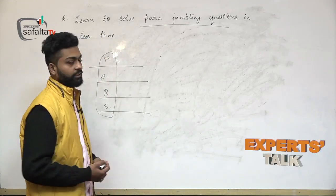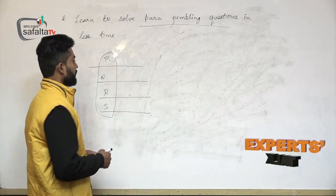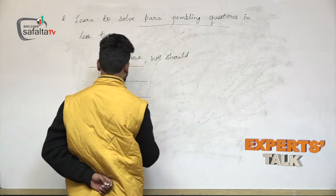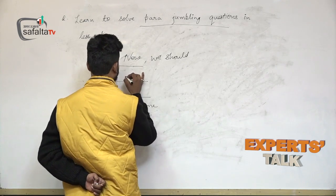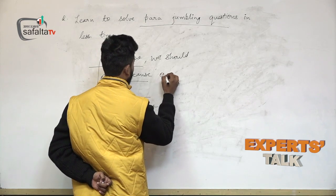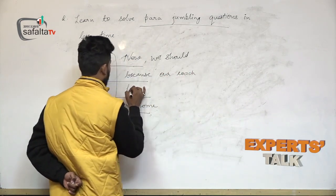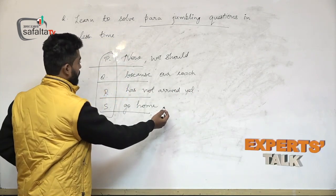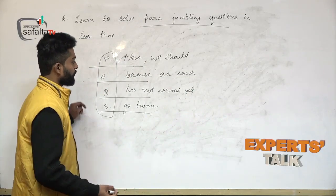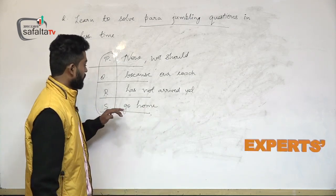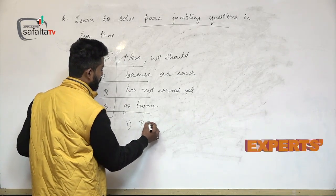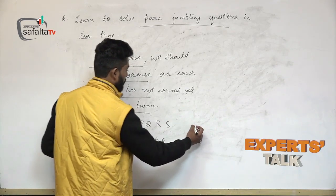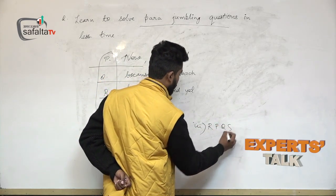You have to arrange these sentences according to the correct sense. In the example given, the sentence parts are: Q - 'because our coach', S - 'has not arrived yet', and R - 'go home'. There will be four options which mention the correct order: PQRS, PSQR, PRQS, and the fourth option is RQSP.